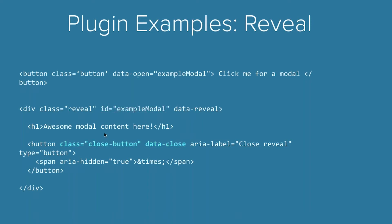One other basic thing to highlight is the data-close approach. Close, open, and toggle all behave in relatively similar ways — they can be targeted with an ID. You can also see that if they don't have an ID, they bubble up. If you include a data-close inside of a reveal, clicking on that will close the reveal. Similarly, there's a close button style which captures that common modal style of being in the upper right corner.